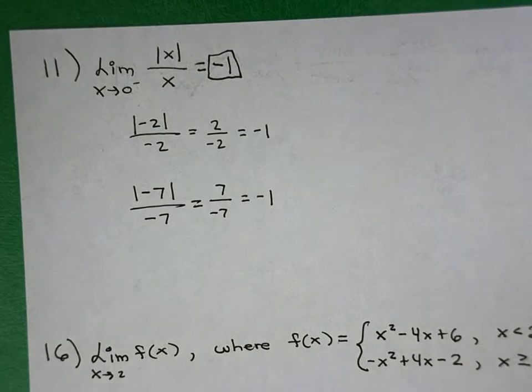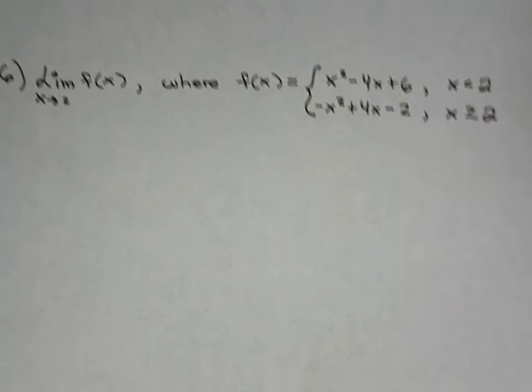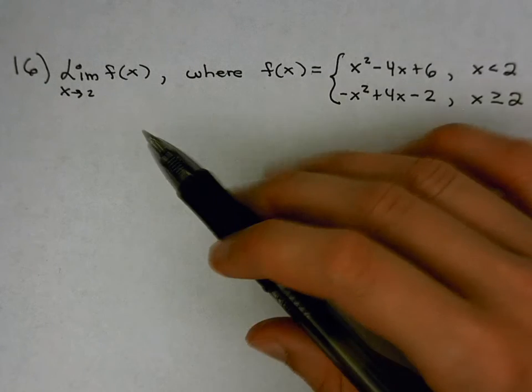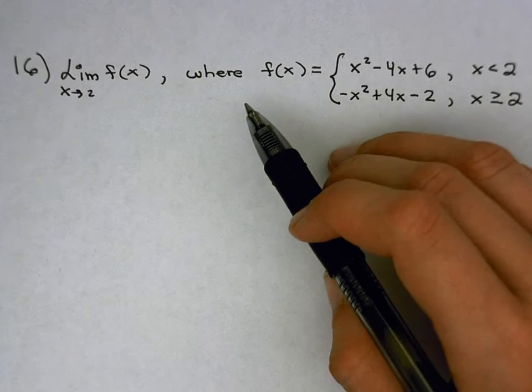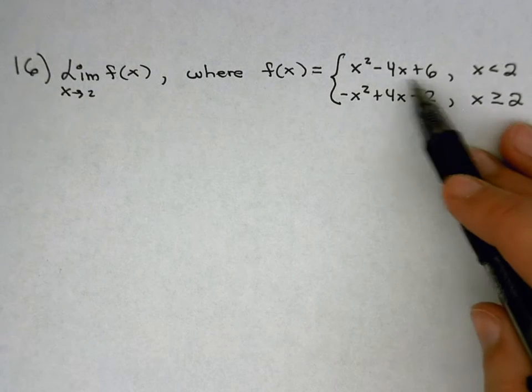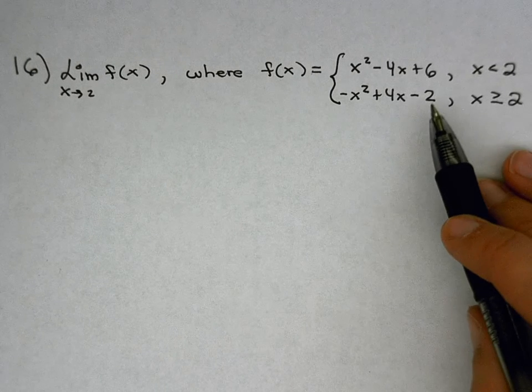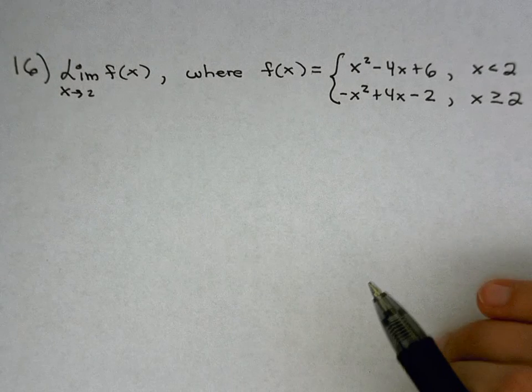Okay? Number 16 was the next one I picked. Number 16 asks us to find the limit as x approaches 2 of f of x. Where f of x is equal to x squared minus 4x plus 6 when x is less than 2, and negative x squared plus 4x minus 2 when x is greater than or equal to 2.